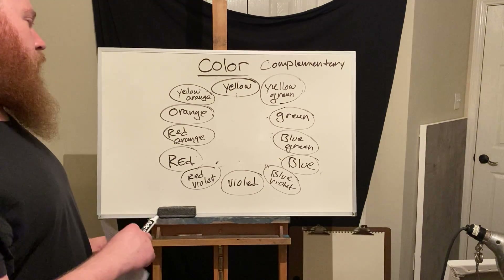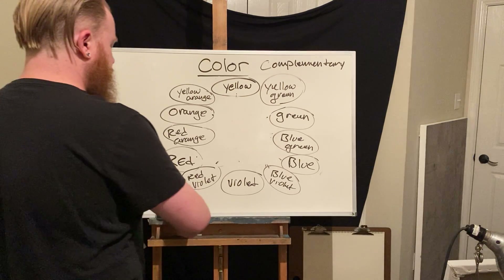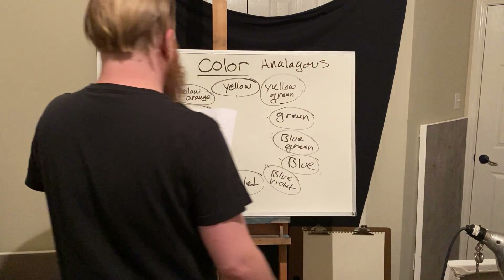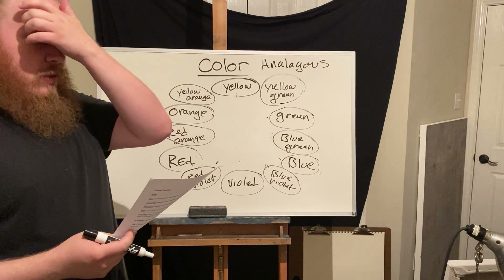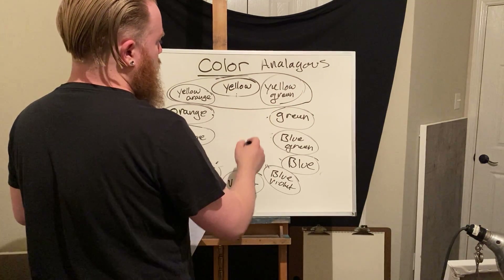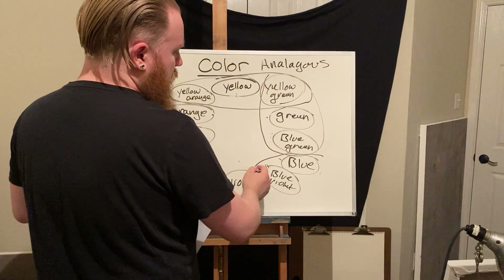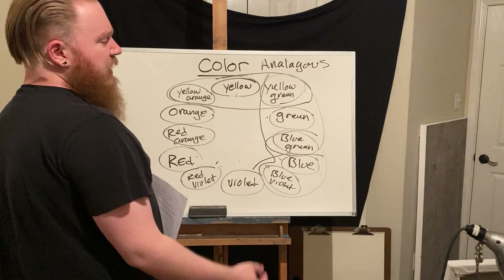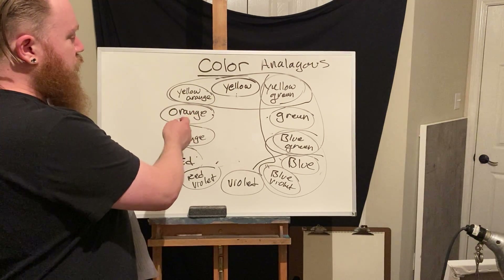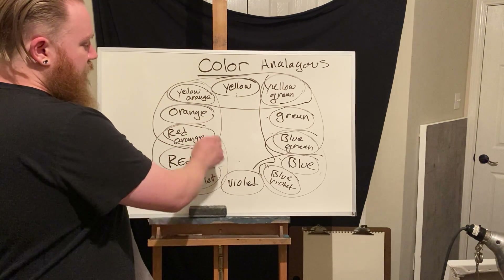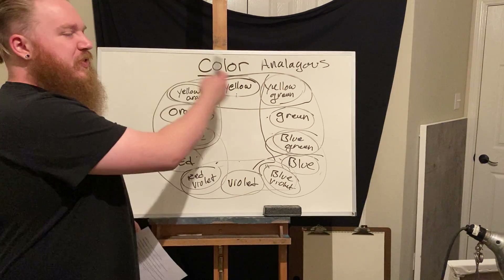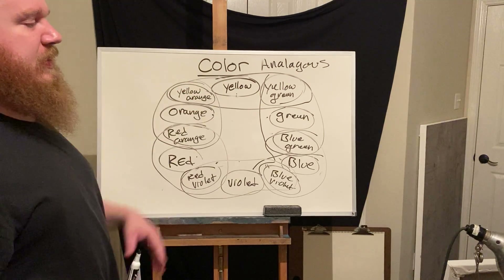Another scheme is analogous — a color scheme based on adjacent colors along the color wheel, each containing the same hue. That would be something like yellow, yellow-green, and yellow-orange, or blue-green, blue, and blue-violet. It's usually the three adjacent colors on the wheel, and they all share a base hue. This creates a harmonious, cohesive set of colors.